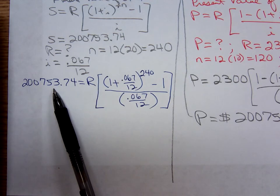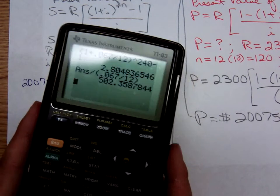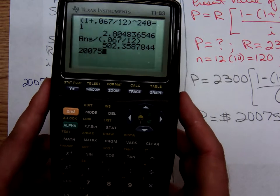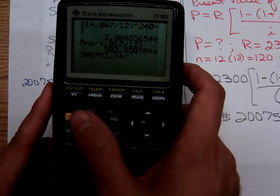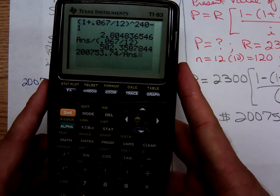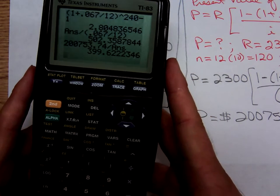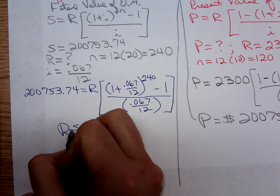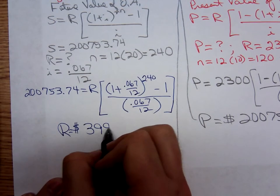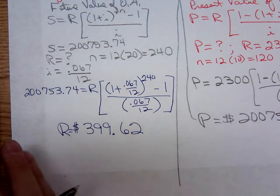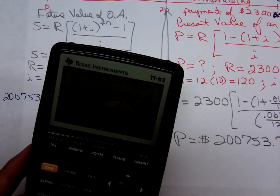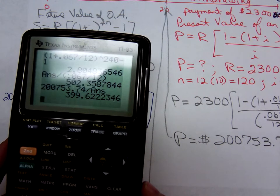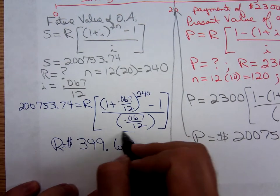That's 502 times R. To get R by itself, we have to divide both sides by that bracket amount. So we take the 200,753.74 and we divide it by the previous answer. She needs to make monthly deposits of, if she wants to be able to withdraw $2,300 a month once she retires, she needs to make monthly deposits of $399.62. Hopefully you can see that's $399.62.